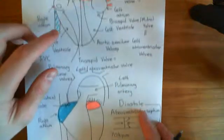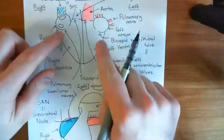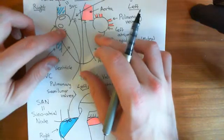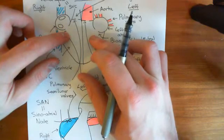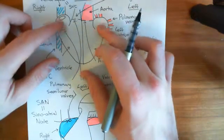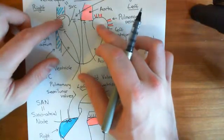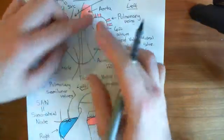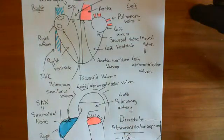The tricuspid valve and the bicuspid or mitral valve — also called the atrioventricular valves — are one-way gates. They allow blood to flow from the atria to the ventricles. But once blood starts trying to flow back from the ventricles to the atria, the blood forces those gates shut, and they won't bend back into the atria. They just close, stopping blood from going back.